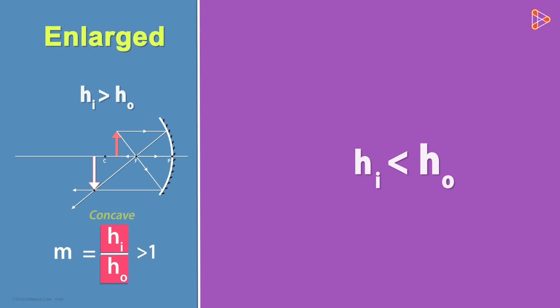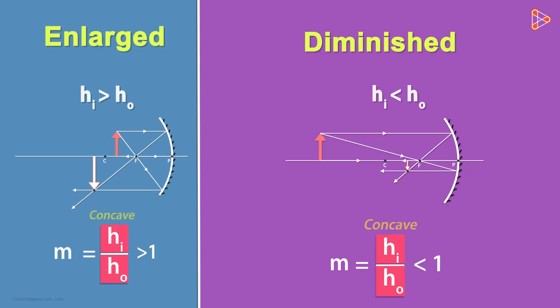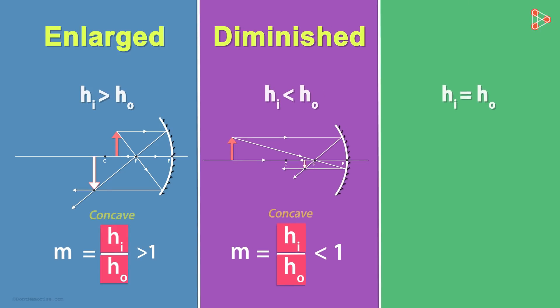What if HI is less than HO? Yes, the ratio will be less than 1. The image is diminished. What if they are equal? Their equality implies that both the object and the image are of the same size. The ratio will be 1.